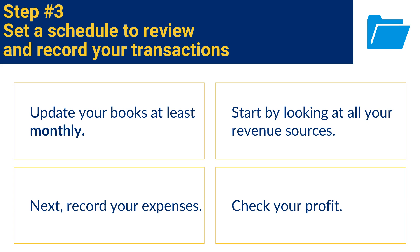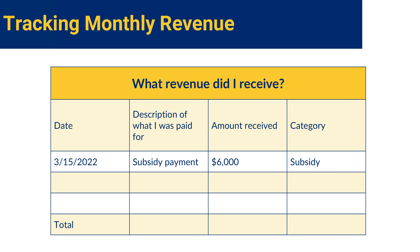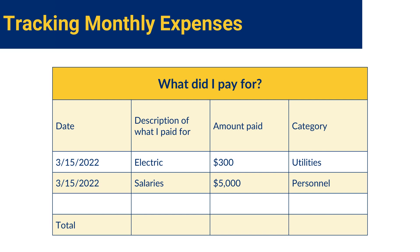Once you have recorded your revenue and expenses for the month, you will then total each category. Subtracting your revenue from your expenses will give you an idea of how much profit you made that month. You may want to consider holding on to some of that profit, leaving it in the business for a rainy day, or to help pay your bills. Shown here is an example for documenting what you receive — you can use this helpful template to record and track your monthly revenue. Here is another example which shows what you are spending, and this template can be used to record and track your monthly expenses.